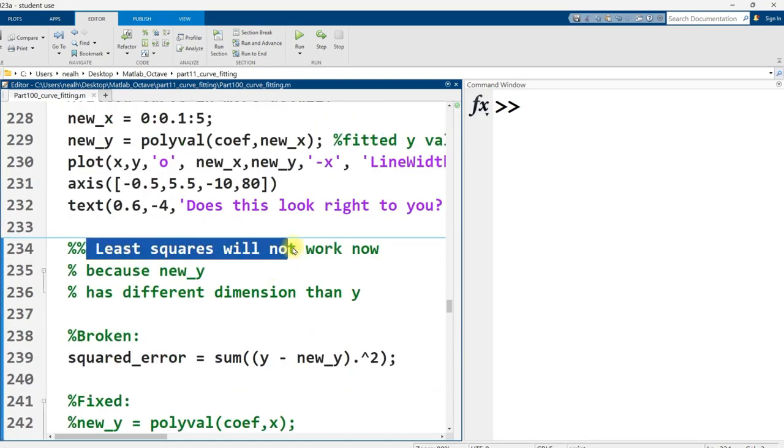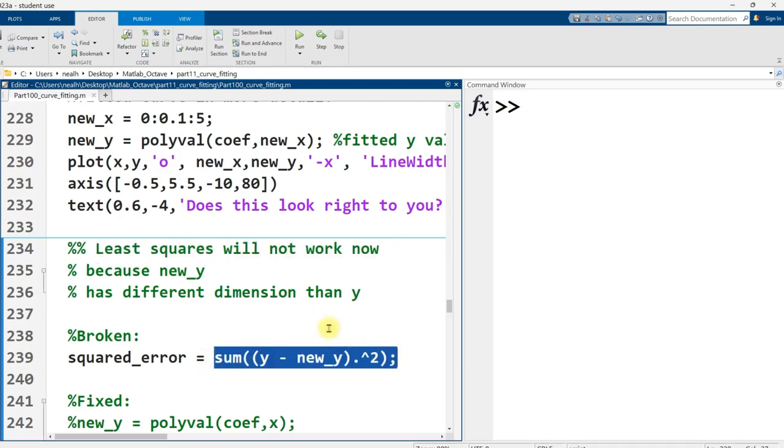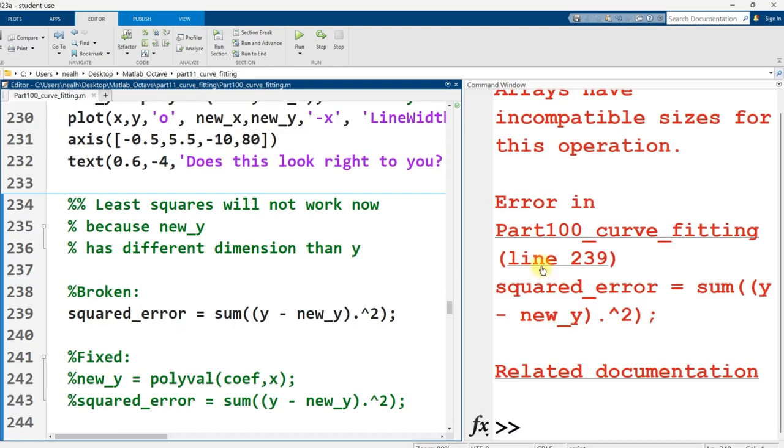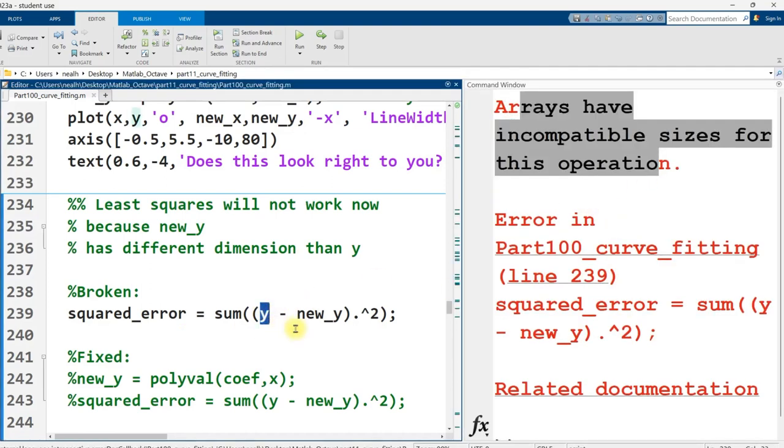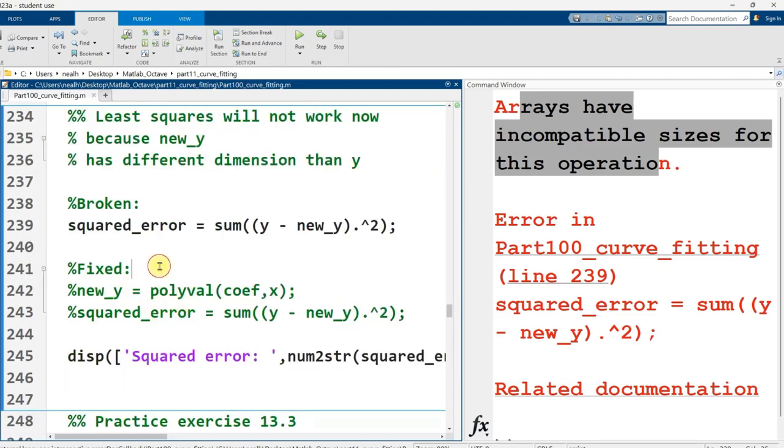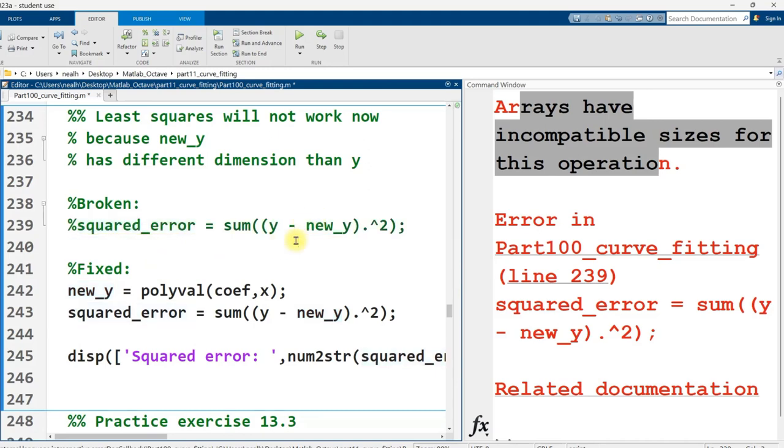However, if I then try and do a least squares error, like the way I've been calculating it before, it's not going to work. If I try and run this, it gives me this error here. The arrays have incompatible sizes. The original y values, there's only six of them. The new y values, there's tons of them because I used a step size of 0.1.